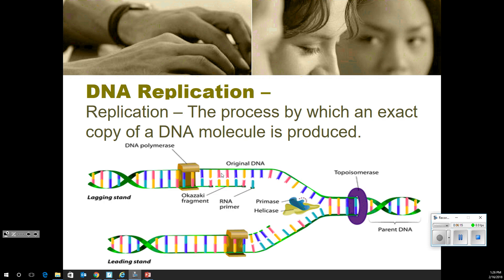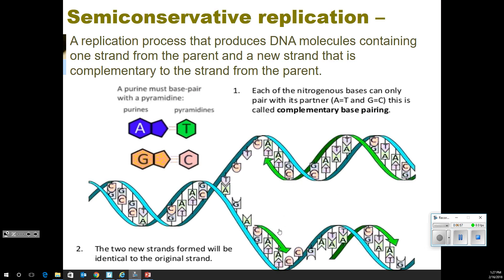So, DNA replication: it was discussed a bit in the video. Basically, topoisomerase, primase, and helicase come and separate the DNA. As the DNA separates, we get an RNA primer. This little fragment is called an Okazaki fragment because it fits perfectly with the original DNA and then will be linked. We use DNA polymerase to link that and replicate the DNA. Semiconservative replication is when we have a DNA molecule containing one strand from the parent and one new complementary strand.